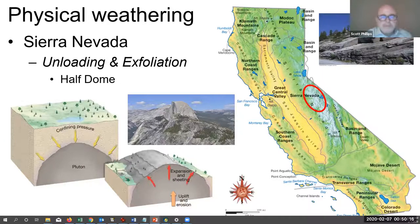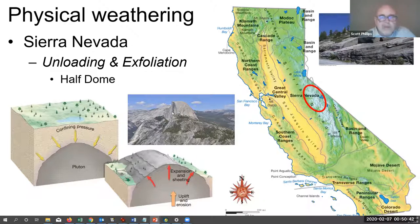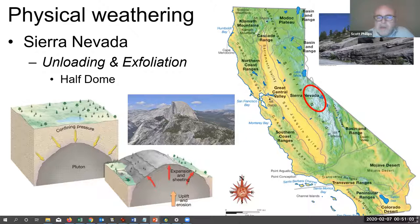Exogenic processes are those that wear down or denude the landscape, including weathering, mass wasting, and erosion. Examples of physical weathering can be found in the Sierra Nevada, including processes like unloading and exfoliation. This is what created dome-shaped rocks like Half Dome — the rocks peel away like layers of an onion as the pressure above them is removed, causing them to expand. As the layers slough off, they leave behind a dome. That's called exfoliation.